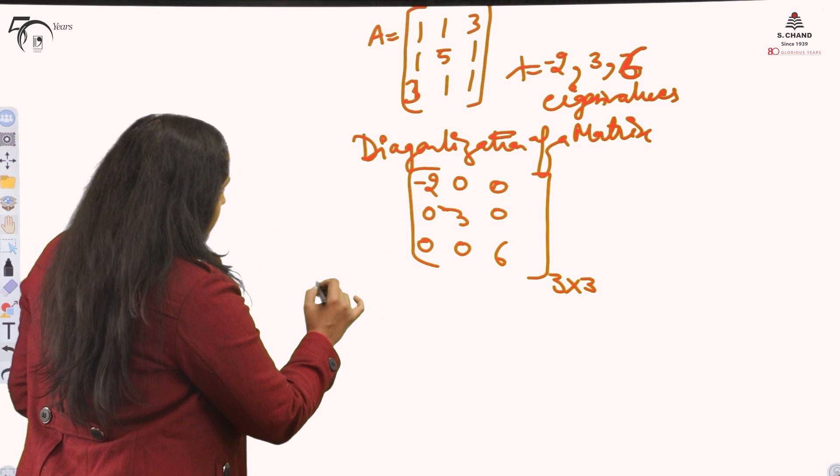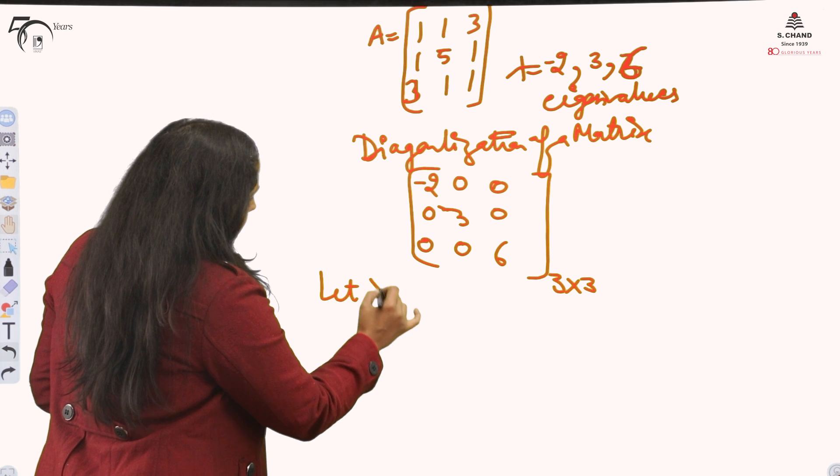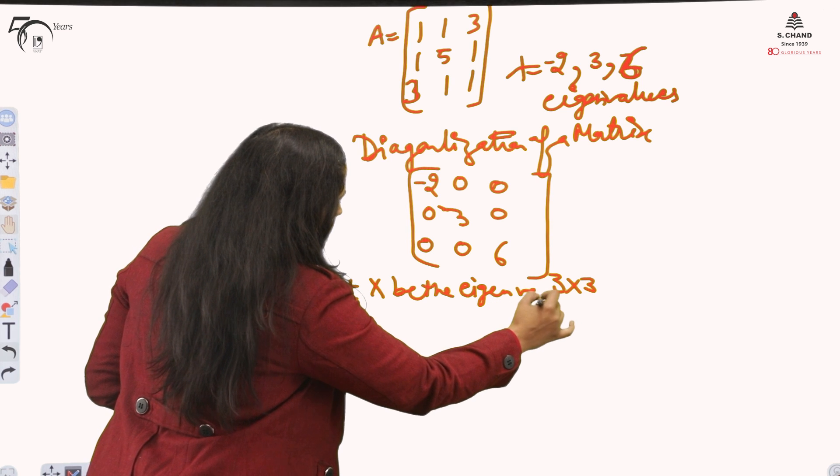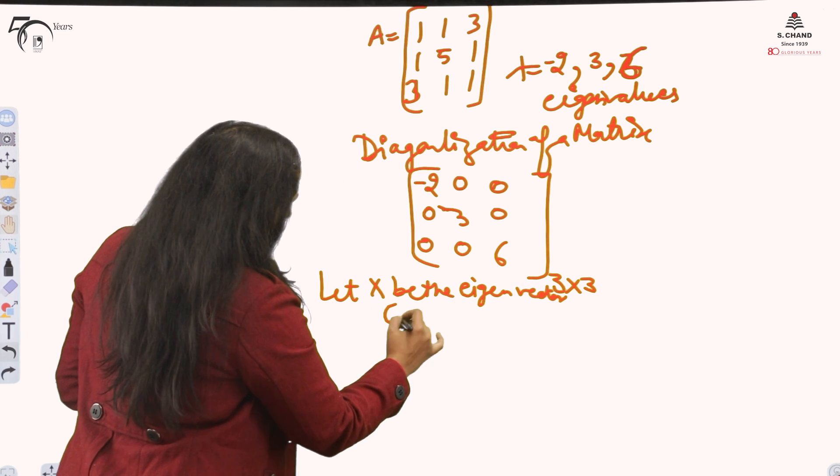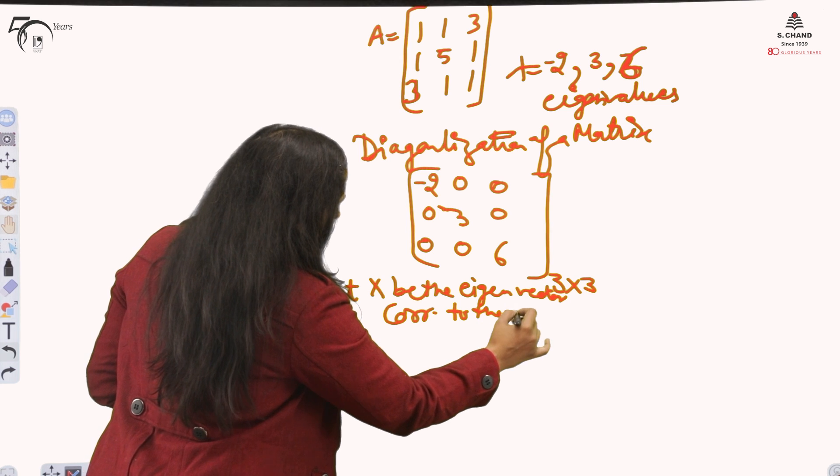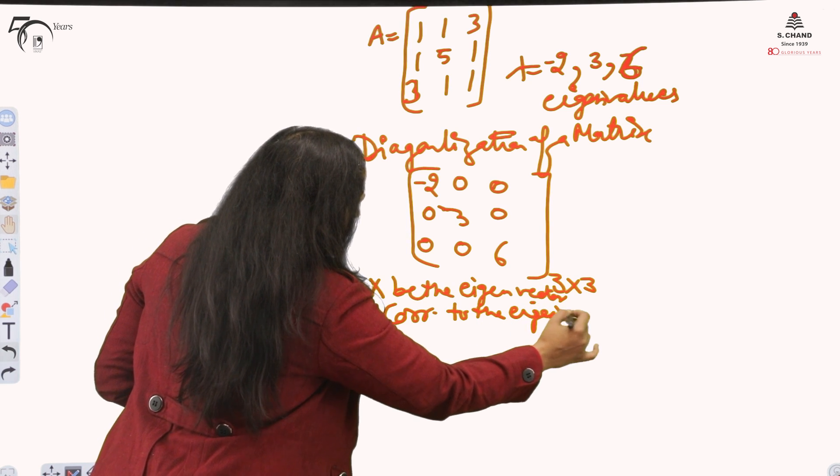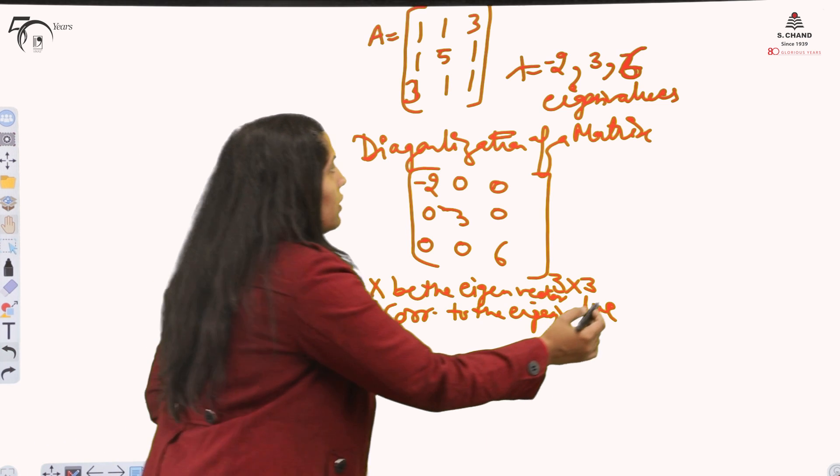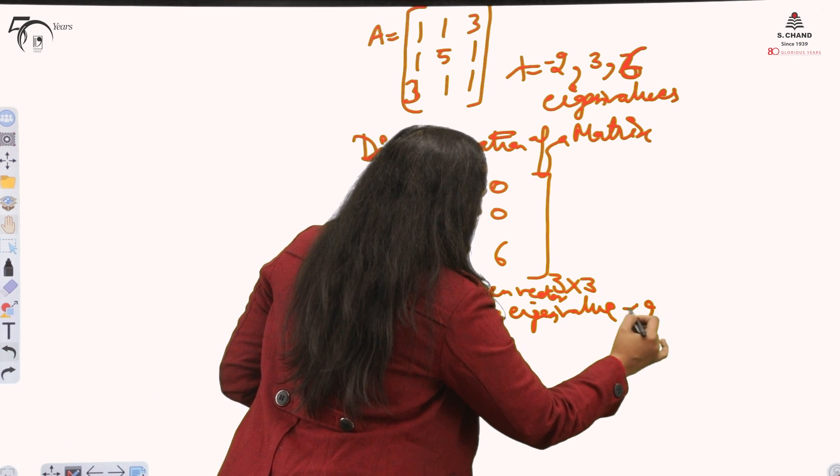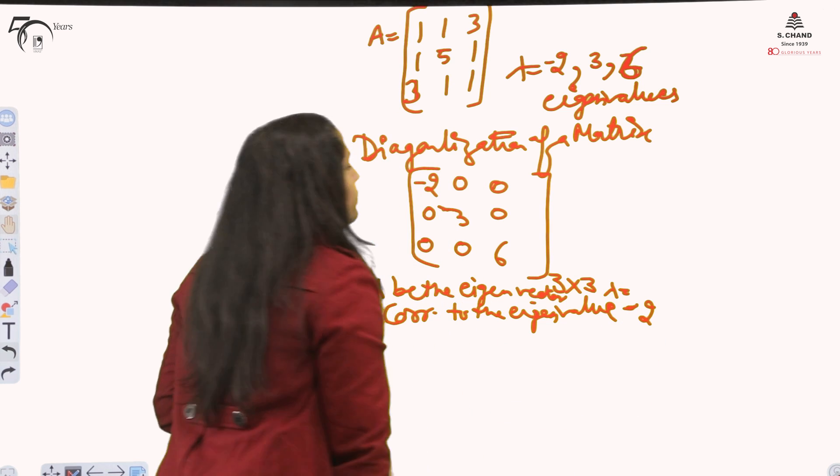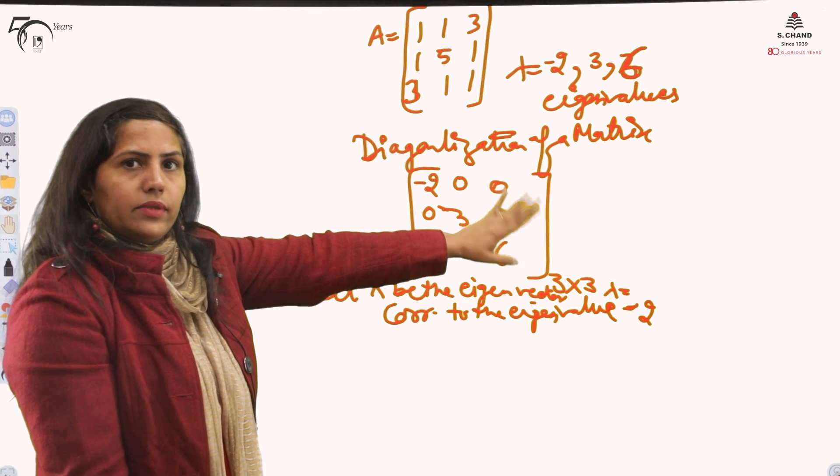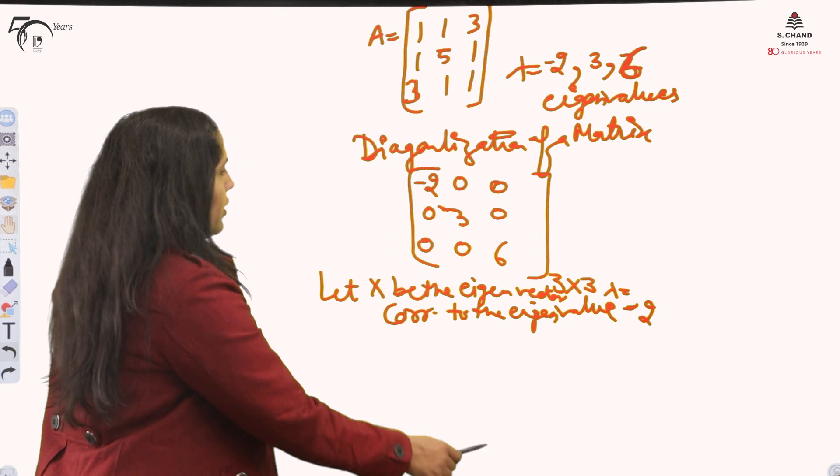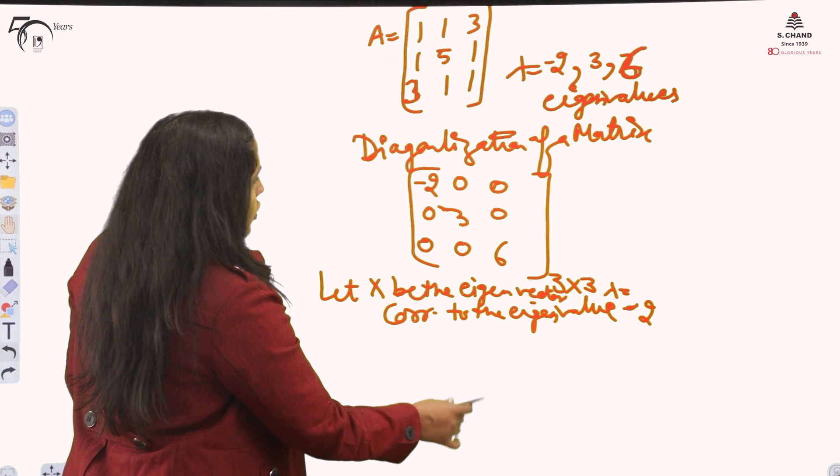How we find eigenvectors? Let x be the eigenvector corresponding to the eigenvalue. This we are assuming and then we will find what this x vector actually is. For lambda equal to minus 2, the process will be same. For the rest, 3 and 6, it will be completely the same process.